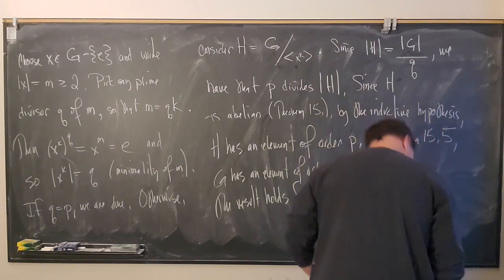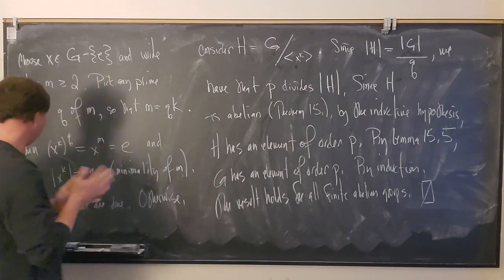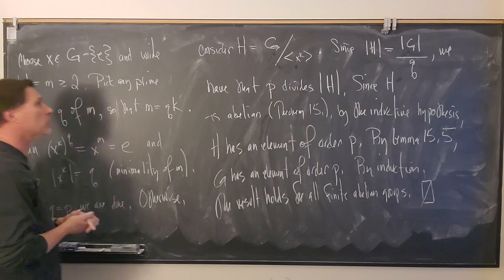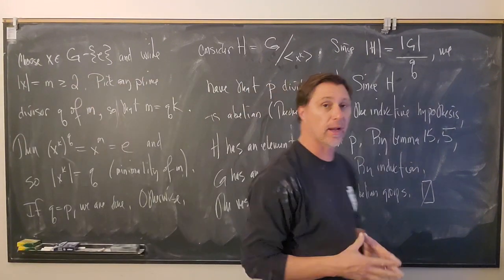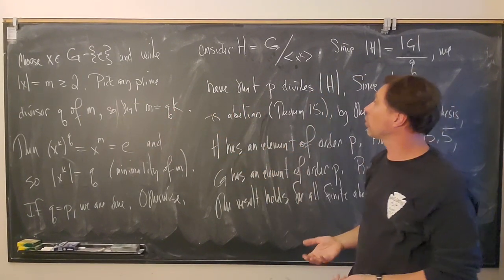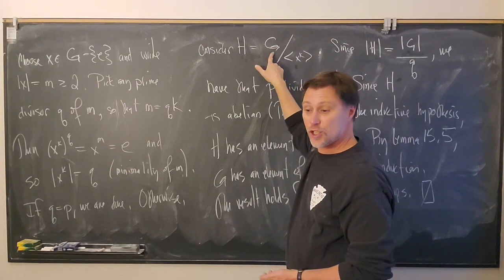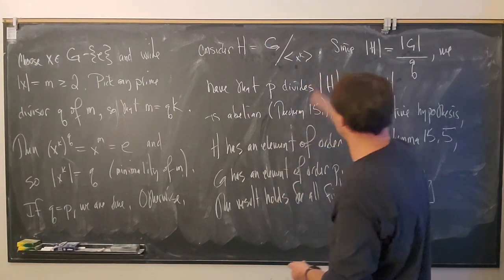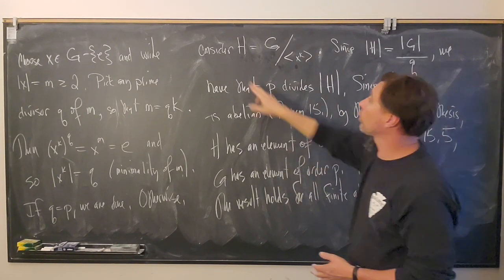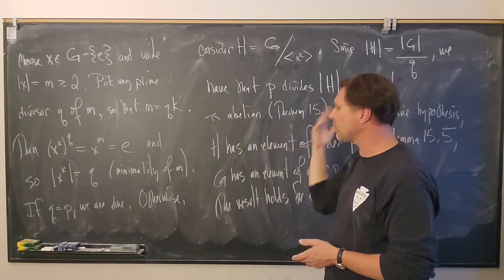That's a fun proof. Here's what happened: we wanted to do induction, so we needed to drop down a level to a group of smaller order. We created a quotient whose order was strictly less than G, applied the inductive hypothesis to get an element of order p inside H, and then our previous lemma gave us the element sitting inside G.